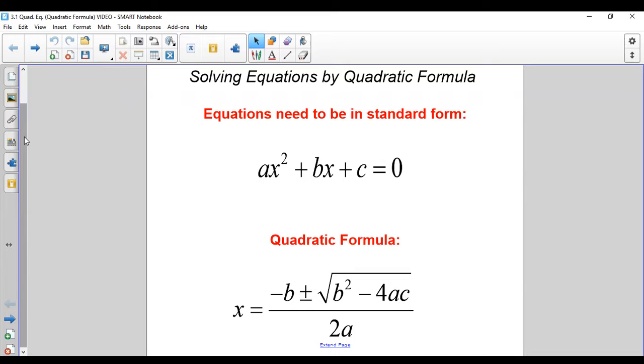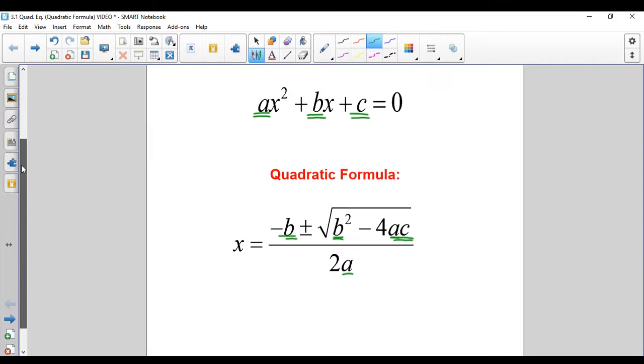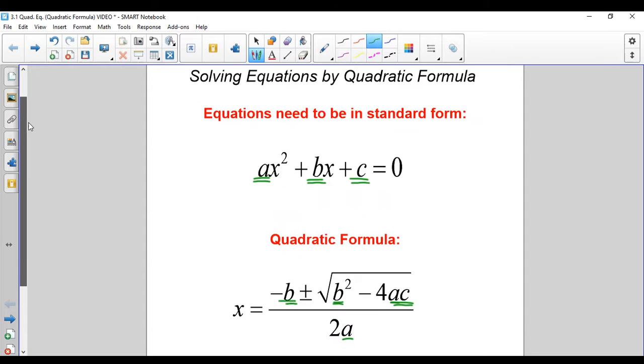The quadratic formula is right there: x equals negative b plus or minus square root of b squared minus 4ac, all over 2a. These a, b, and c are coming from standard form. You're pulling that information out in each problem. I have the quadratic formula on each slide and on the worksheet this week, so don't worry about memorizing it.